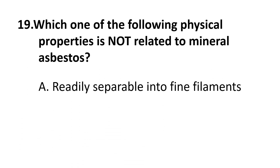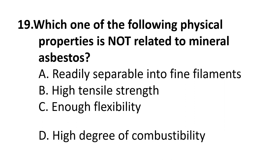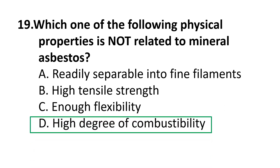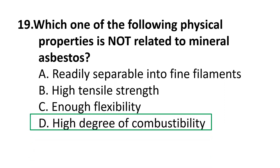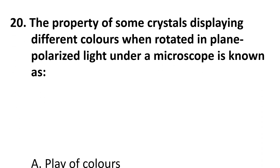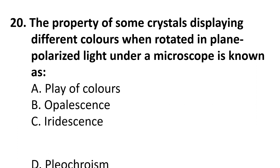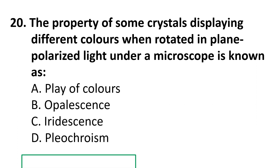Question 19: Which one of the following physical properties is not related to mineral asbestos? A) Readily separable into fine elements, B) High tensile strength, C) Non-flexibility, D) High degree of combustibility. The correct answer is D) High degree of combustibility.